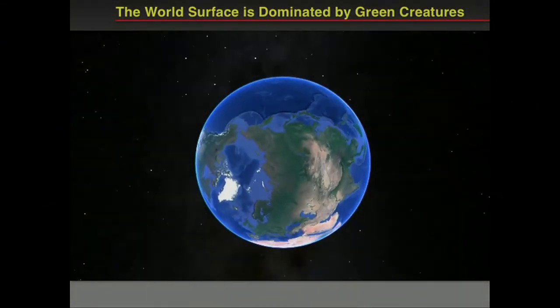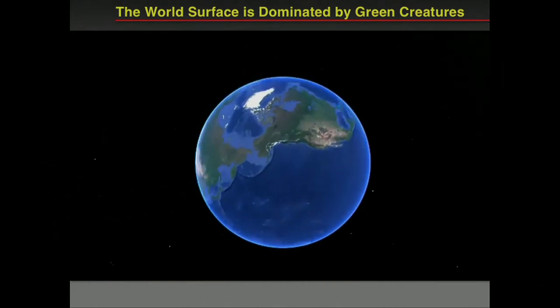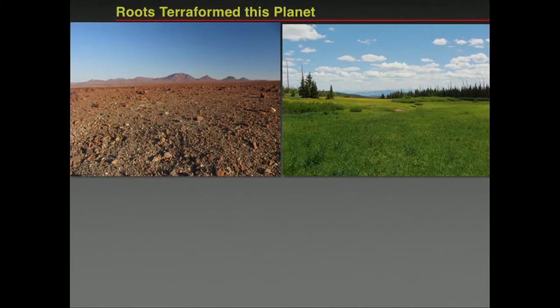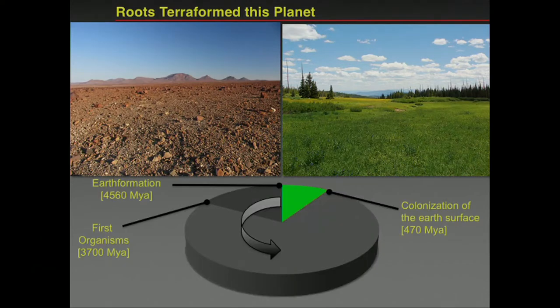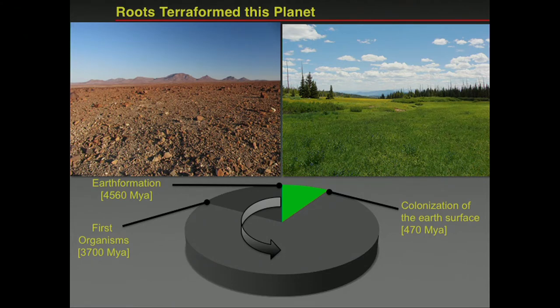Earth is colonized by plants, and they basically constitute the very basics and the fundament for our civilization and for everything living on the surface of our Earth. If we think back a couple of hundred million years, that actually looked very different. Before land plants came to be and colonized the surfaces, it probably looked like Mars on the surface of our planet.